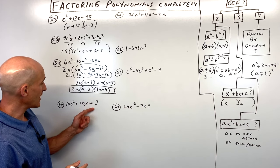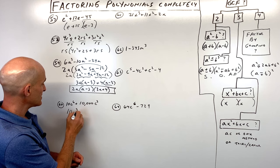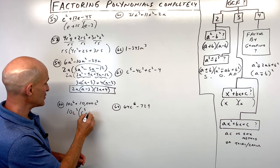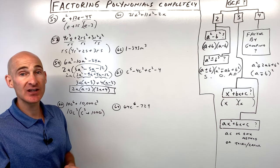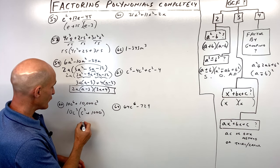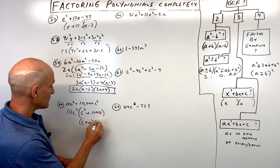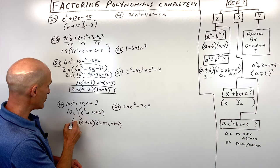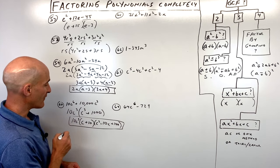Number sixty has a greatest common factor of 10c cubed. Factoring that out gives 10c cubed times c cubed plus 1000. Since 1000 is 10 cubed, this is a sum of two cubes. Factor: c plus 10 times c squared minus 10c plus 100, then bring down that greatest common factor.